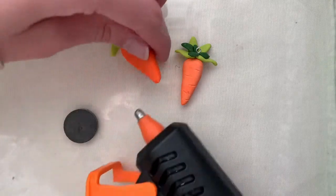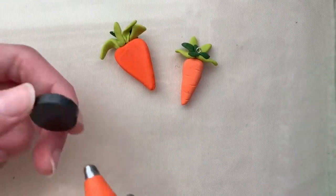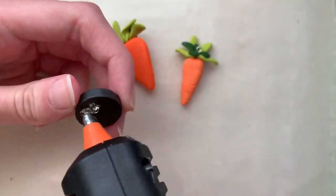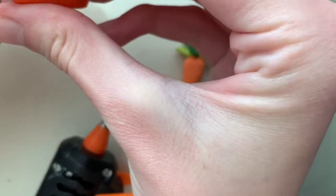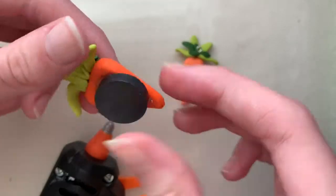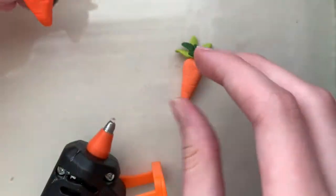Now you're going to get a magnet and a hot glue gun and you're going to put hot glue on the magnet and stick it to the back of the carrot. Ta-da!